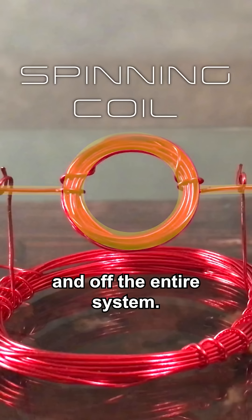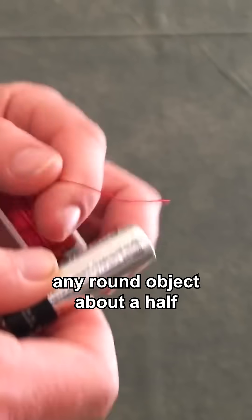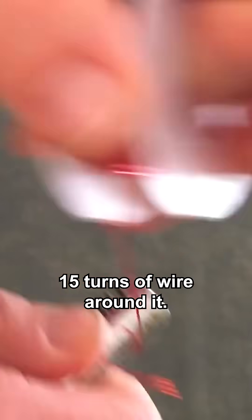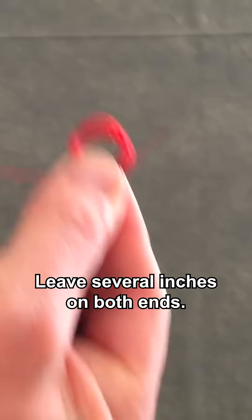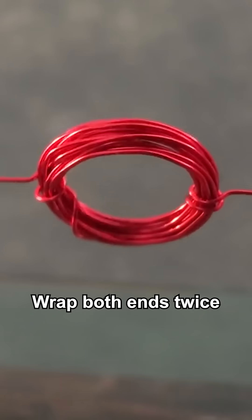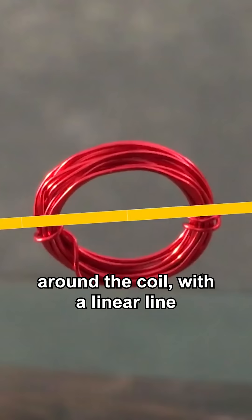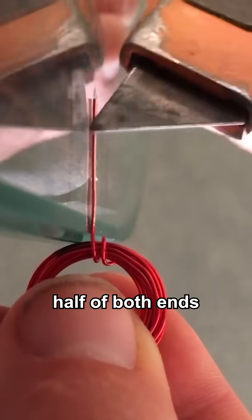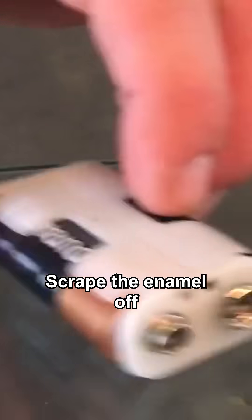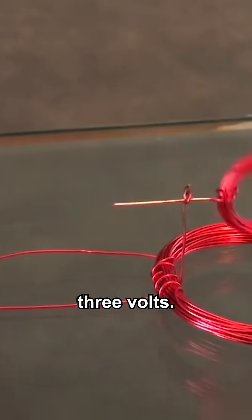The spindle turns on and off the entire system. Find yourself any round object about a half an inch in diameter and wrap 15 turns of wire around it. Leave several inches on both ends. Wrap both ends twice around the coil with a linear line between the two ends. Scrape the enamel off the top half of both ends for an on-off cycle. Scrape the enamel off the input wires and apply three volts.